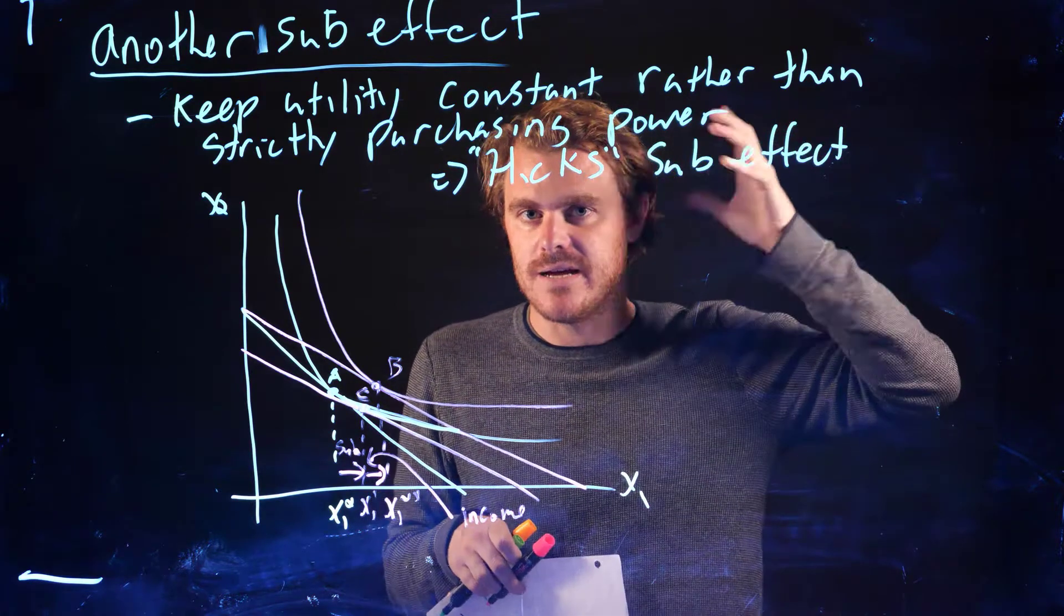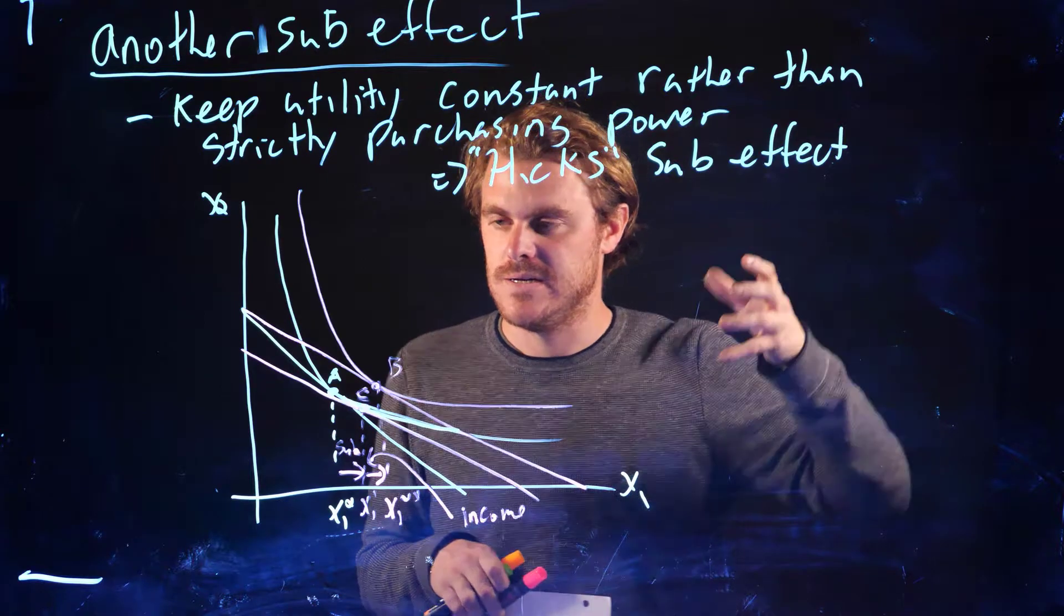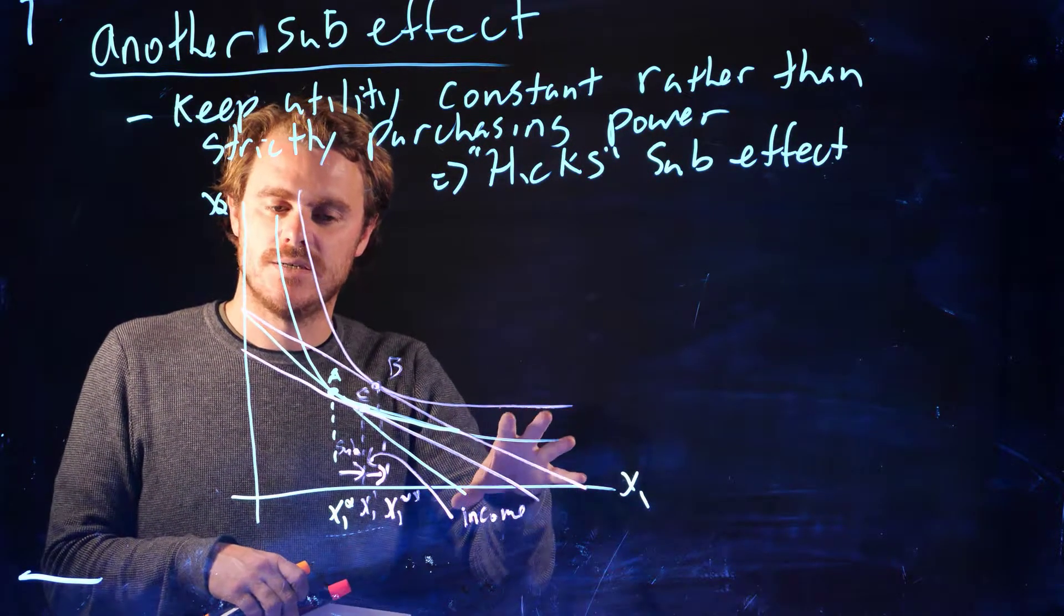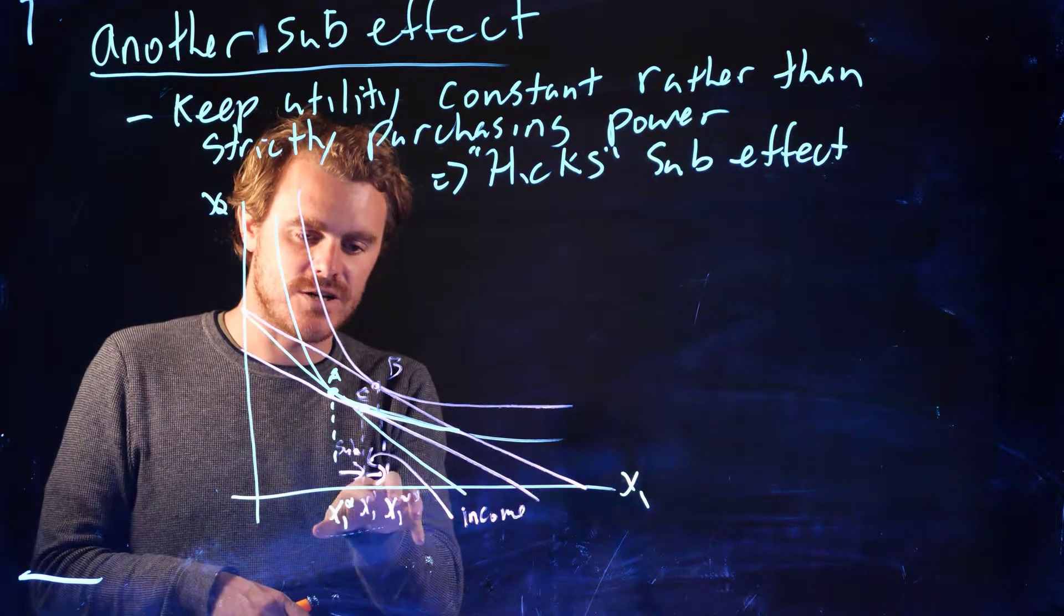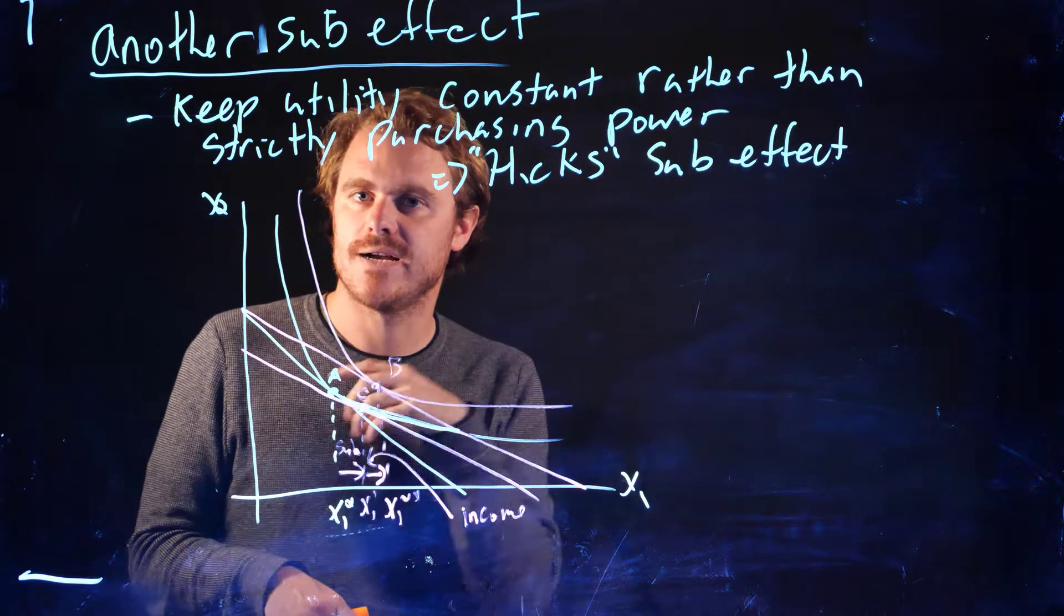And that's how we're thinking about, or that's how Hicks is thinking about holding purchasing power constant. So this is just a different kind of substitution effect. You have two ways of calculating a substitution effect, and it's obviously going to result in a different income effect as well, because the substitution effect will be slightly different.